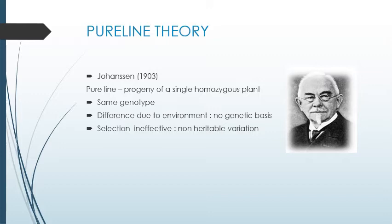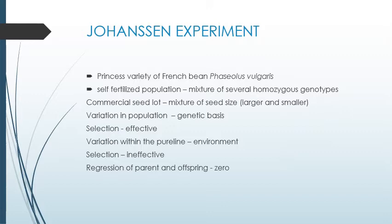When selection requires variation but there is no variation, selection is ineffective. Selection also requires a heritable character; since there is no variation, there is no need for selecting a character — it has a non-heritable variation, meaning no variation. Johansson's experiment: he did an experiment in the Princess variety of French bean, Phaseolus vulgaris. He bought seeds from the market — a commercial seed lot of French bean — which consisted of a mixture of seed sizes, larger and smaller.